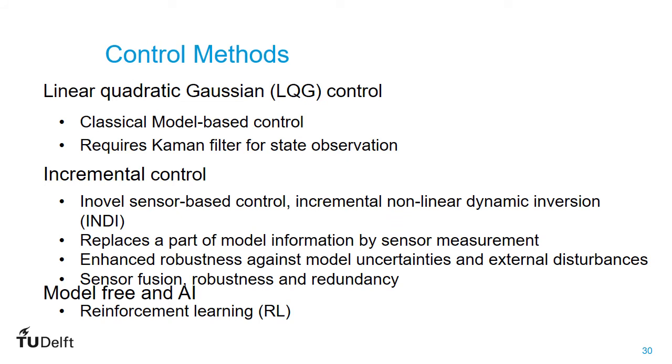We have compared two control methods in our wing. First, linear quadratic Gaussian control. This is a classical model-based control method. It is a well-proven method belonging to a class of optimal control methods. However, it requires significant tuning of the Kalman filter model and the control parameters in order to have good performance.